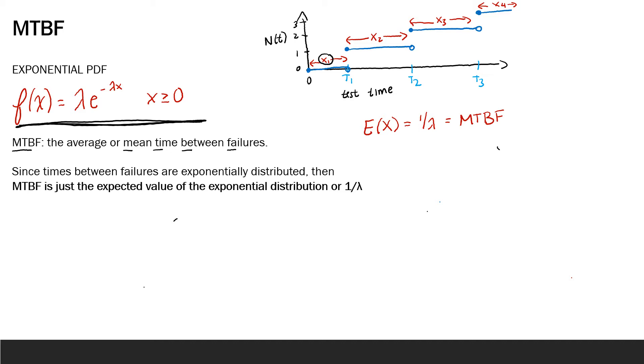So at t sub 1 we've incremented up because we've counted one failure, at t sub 2 we count up, so we have two failures total. And our x sub i's denote the times between these failures occurring, and we derive that the way we can assign probabilities to these times is through the exponential distribution.